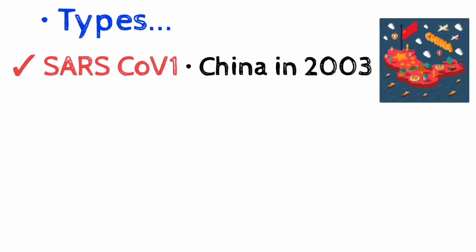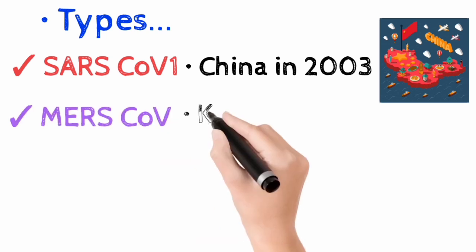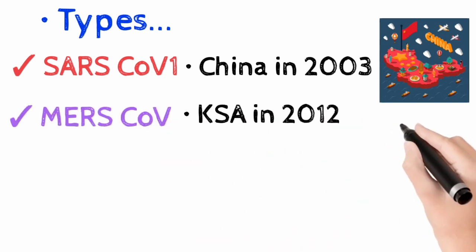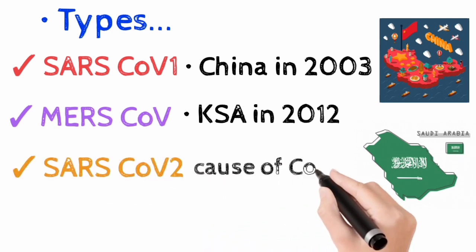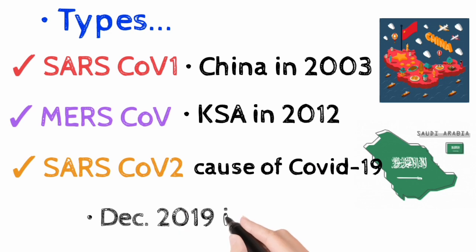Middle East respiratory syndrome coronavirus or MERS-CoV that was first identified in the Kingdom of Saudi Arabia in 2012. Hence, severe acute respiratory syndrome coronavirus 2 or SARS-CoV-2, the name of the virus that caused COVID-19 and was first reported in December 2019.